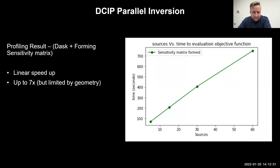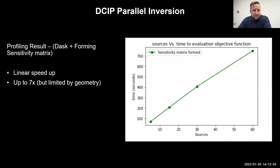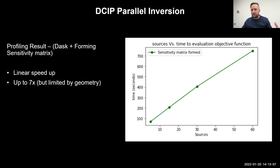If we take Dask, form the sensitivity matrix, and pull it all the way through for the derivatives, we see some nice speedup. With a model of just under half a million cells, 60 sources, and about 26,000 data points, we're seeing a good linear speedup of about seven times. These speedups will be limited by your geometry — specifically your transmitter plus electrode swath — because you can only refine to however small the area you're acquiring. Going from 700 seconds to less than 100 seconds is a good result.